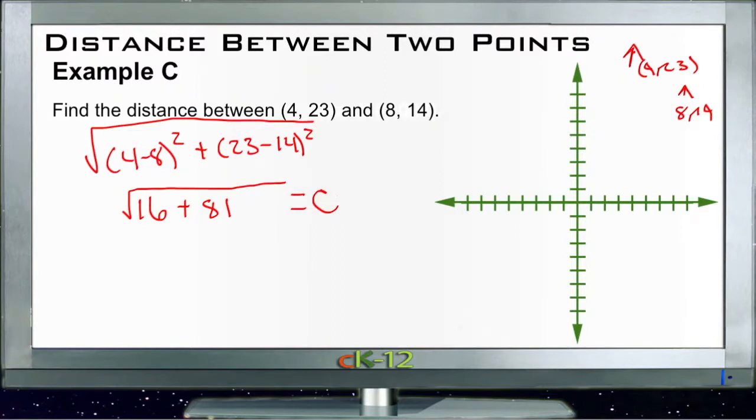And then if we take 16 and 81 we get 97, so we want the square root of 97. That's going to be a little less than 10—square root of 100 would be 10—so we're just going to say maybe 9.9 or so. 9.9 is approximately equal to c, and there we go.